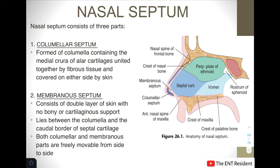Let's start with the columellar septum. The columellar septum is this particular portion as you see in the diagram. It is formed by the columella containing the medial crura of the alar cartilages. The alar cartilage has a medial crus and a lateral crus, and these medial crura get united by fibrous tissue, forming the columella, covered on either side by skin. So this region is known as the columellar septum.